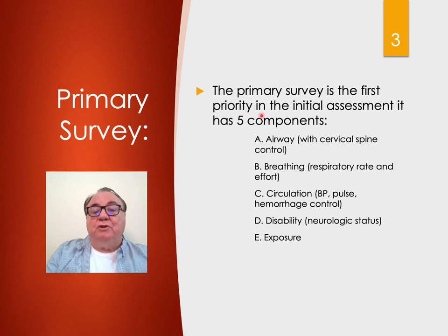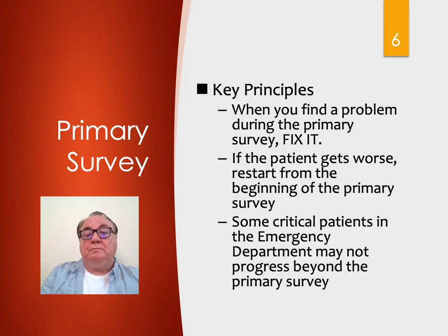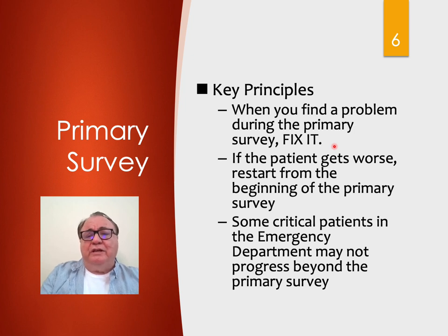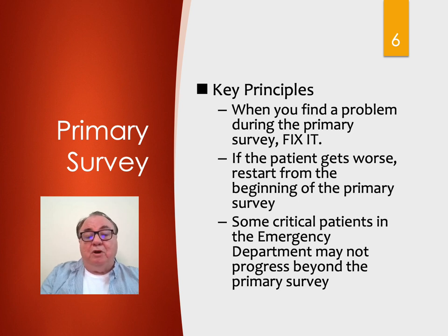The primary survey is the first priority in the initial assessment. A key principle: when you find a problem during the primary survey, you fix it. Resuscitation really goes simultaneously with the primary survey. If the patient gets worse, we start from the beginning of the primary survey. Some critical patients in the emergency department may not progress beyond the primary survey.